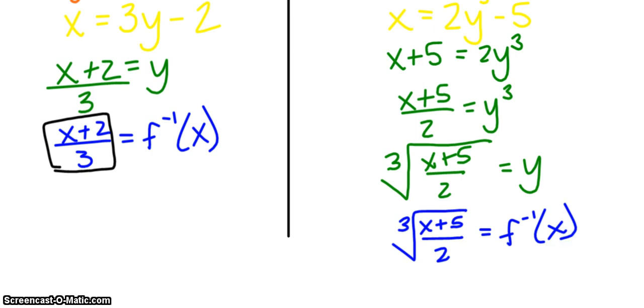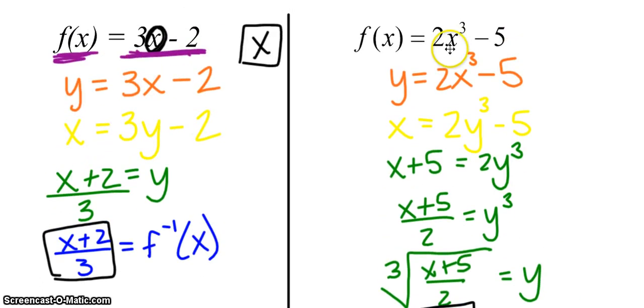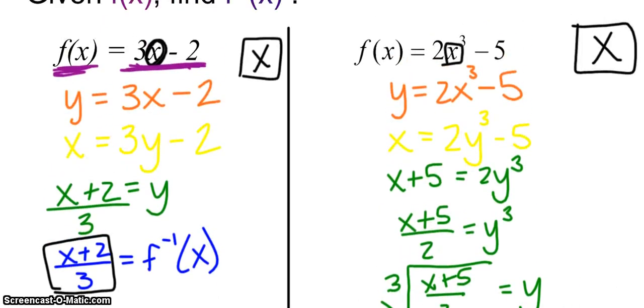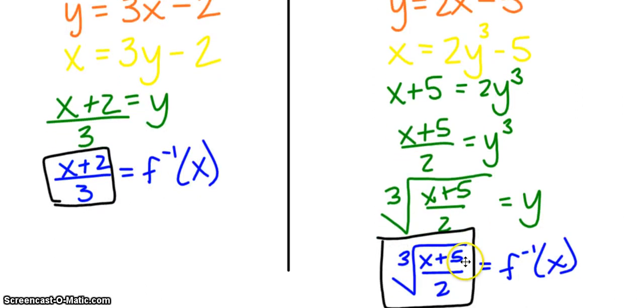Last step is to just change our notation. And again, if you wanted to, you could verify by composition. Take this function, plug it in for x up here, and everything should simplify out to just be x. Which again, if you think through it, this function cubes, multiplies by 2, and then subtracts 5. This function adds 5, divides by 2, and then takes a cubed root. It's undoing all of the features in your original function.